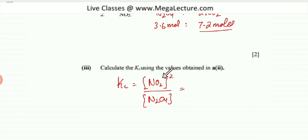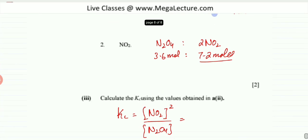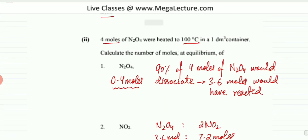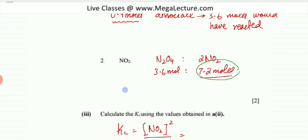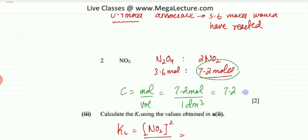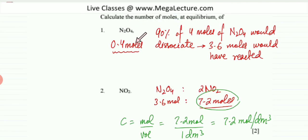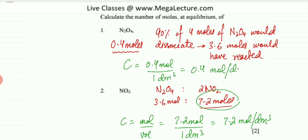Now we substitute concentration values. For NO2, we have 7.2 moles in a 1 dm³ container, so concentration equals 7.2 mol/dm³. For N2O4, 0.4 moles remain in the 1 dm³ container, giving a concentration of 0.4 mol/dm³.